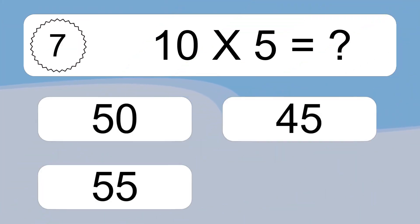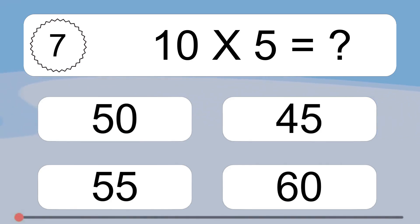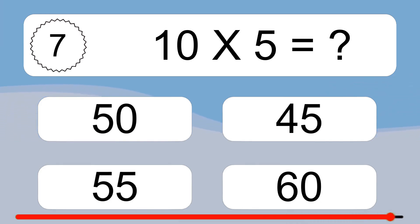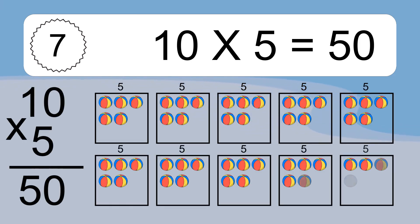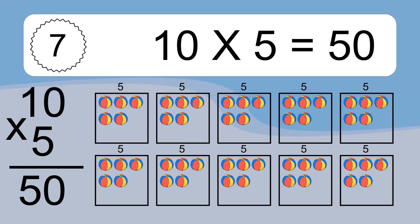10 times 5 equals 50. We have 10 boxes and each box has 5 colorful balls inside. If you count all the balls in all the boxes together, you will have 10 times 5 balls. This equals 50 balls.